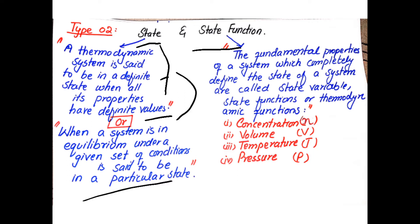A state function refers to the fundamental properties of a system which completely define the state of the system; these are also called state variables. These include properties like temperature, pressure, and volume. All of these are state functions, and they depend only upon the initial and final state.